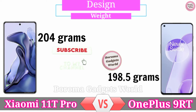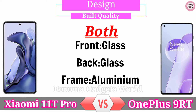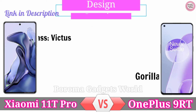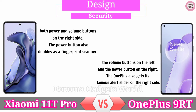In terms of weight, the Xiaomi 11T Pro weighs 204 grams while the OnePlus 9RT comes in at 198.5 grams. Both smartphones look premium and stylish, featuring an aluminium frame and glass back protection. The Xiaomi 11T Pro uses Gorilla Glass Victus on the front, whereas the OnePlus 9RT uses the older Gorilla Glass 5. For security, the Xiaomi 11T Pro has both power and volume buttons on the right, with the power button doubling as a fingerprint scanner. The OnePlus 9RT has volume buttons on the left, power button on the right, and also features its famous alert slider.